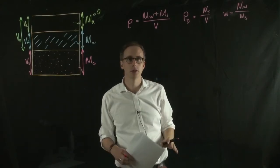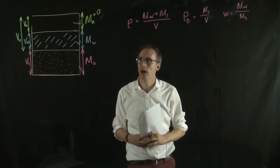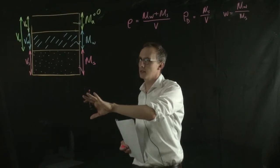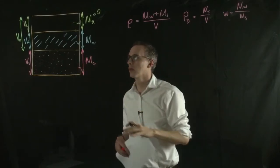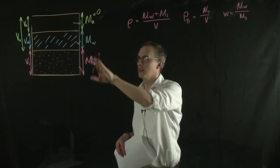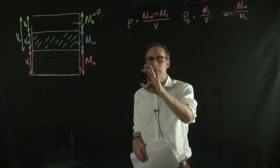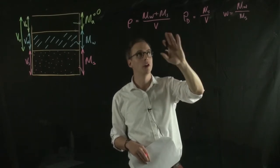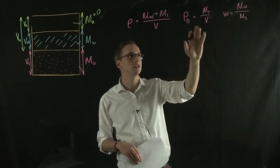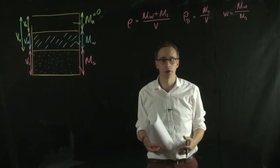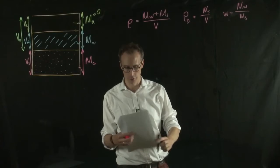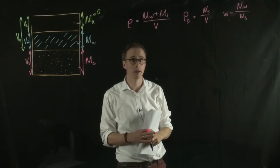And you might want to try and do this yourself first. You can use this three-phase model, so the parameters that describe volume and mass, and use those to relate the bulk density, dry density, and water content into one equation. But I'll go through that now. Well, you might want to try that yourself first.